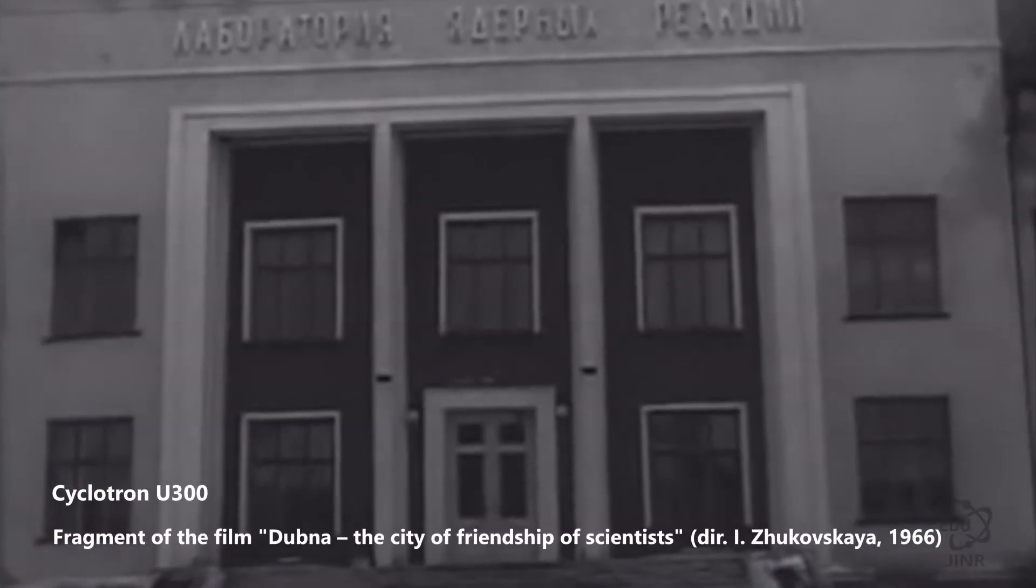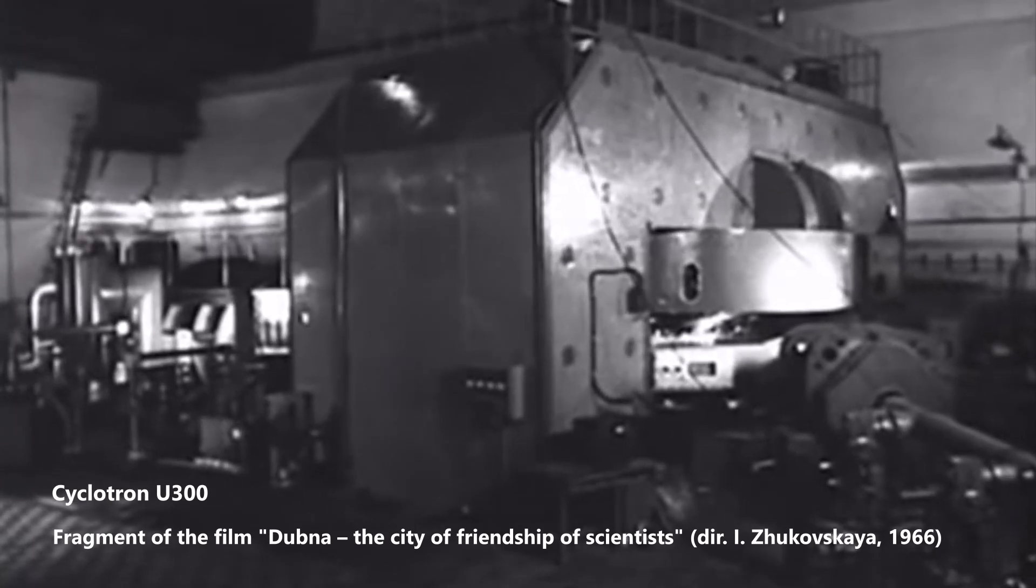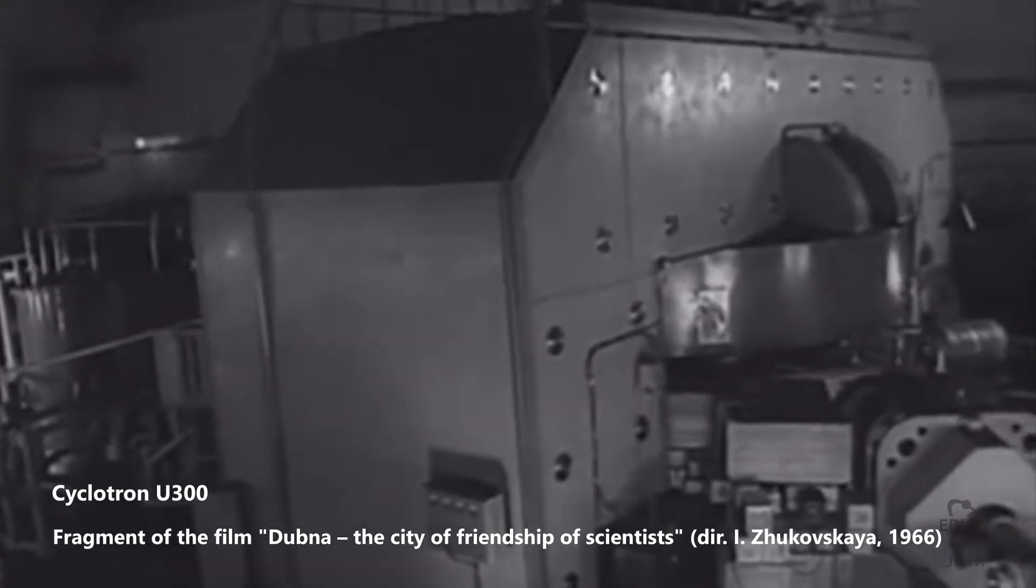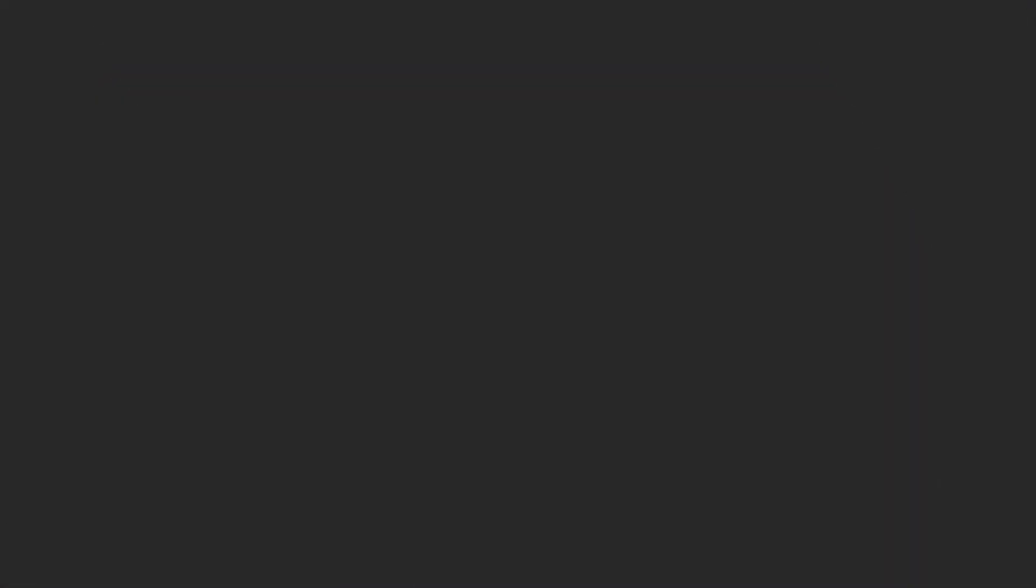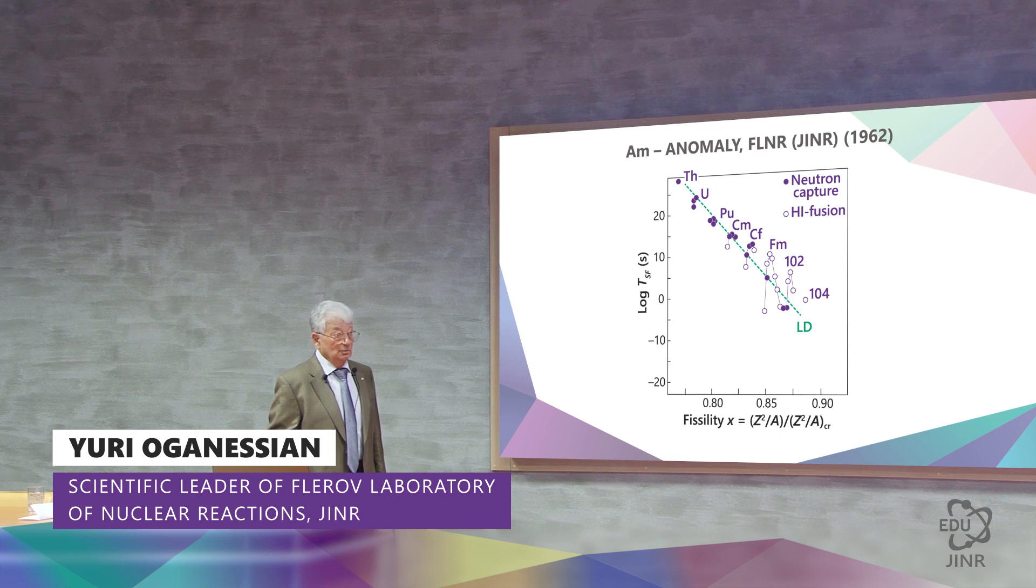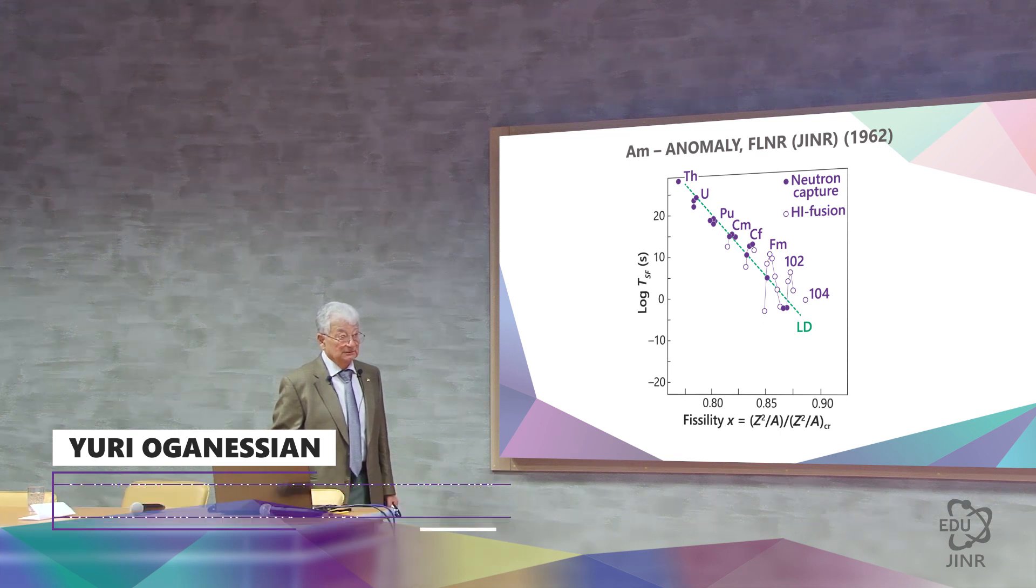The Americium anomaly, which was discovered here at FLNR in 1962, when we were doing an experiment. I myself was a participant in this experiment on the synthesis of the 104th element.